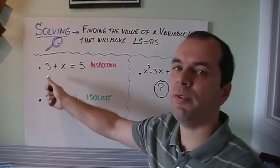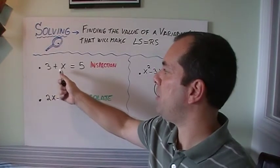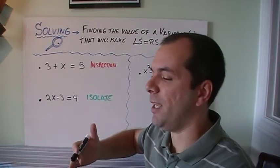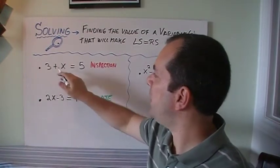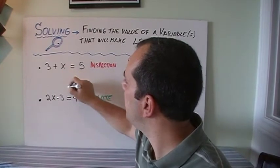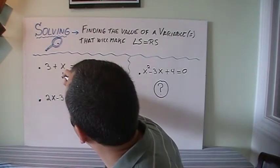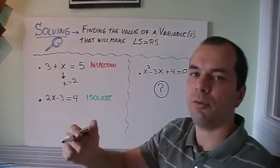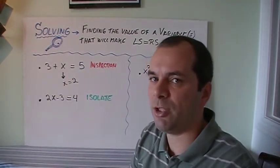For example, if I got something simple like this, 3 plus x equals 5, I can just look at it and realize that 3 plus something gives me 5. So by inspection, I can tell that x is equal to 2 because 3 plus 2 is 5. We call that by inspection and that's okay.